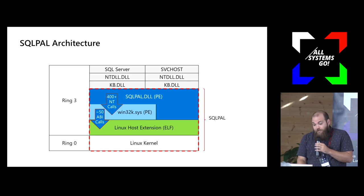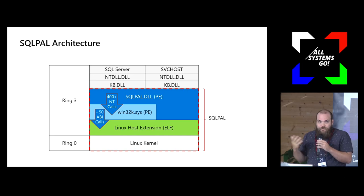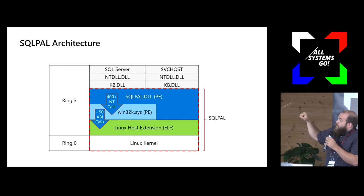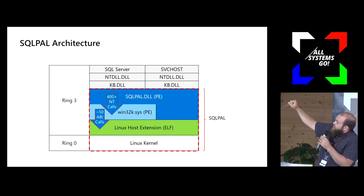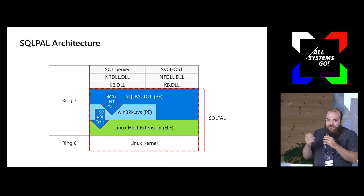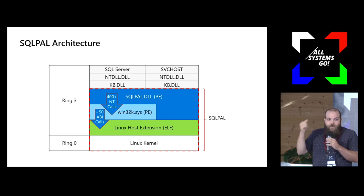Windows manages memory differently than Linux. You can separately commit and separately reserve in Windows - there's not really a concept of that in Linux. So we actually had to build our own virtual memory manager inside SQL Pal. The SQL Server process and any other virtual process running inside SQL Pal runs in one giant shared address space. We have to manage that address space - if one process dies, we have to clean up mapped memory, unmap it, manage protections, all that.